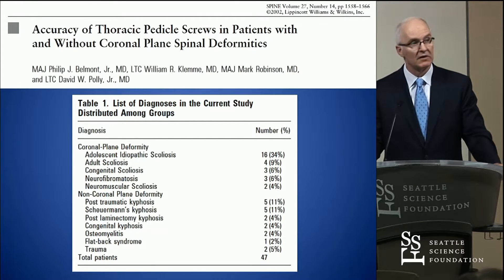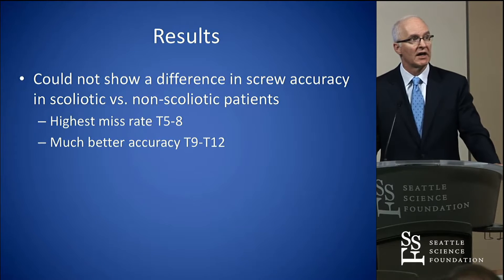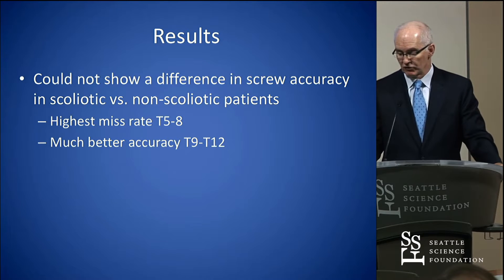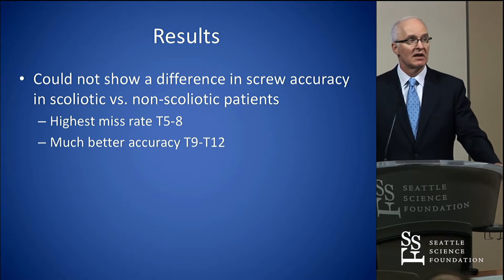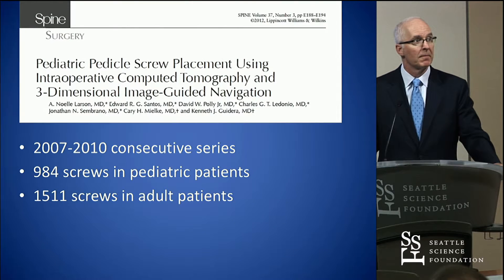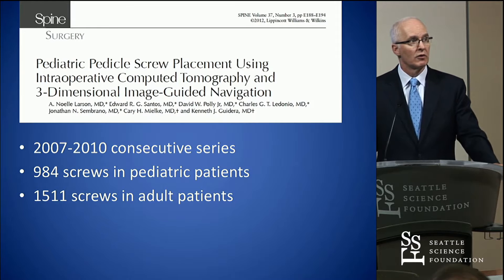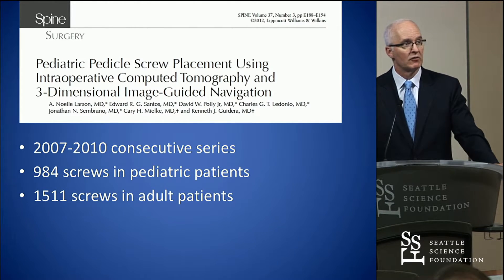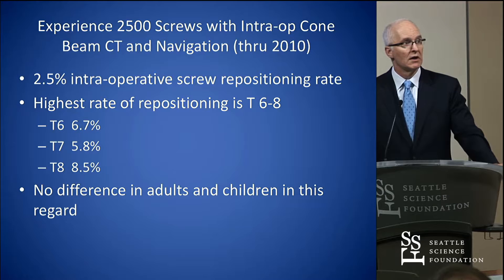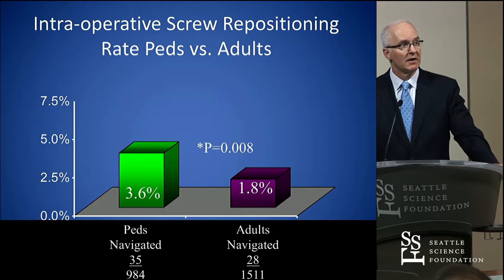We couldn't show a difference between scoliotic and non-scoliotic patients in this initial series — we just didn't have enough patients. But we did see that T5–T8 was the area where we missed most frequently. In our prospective cohort study in Minnesota looking at about 2,500 screws, consistently T6 to T8 was the area with the most frequent malposition rate.